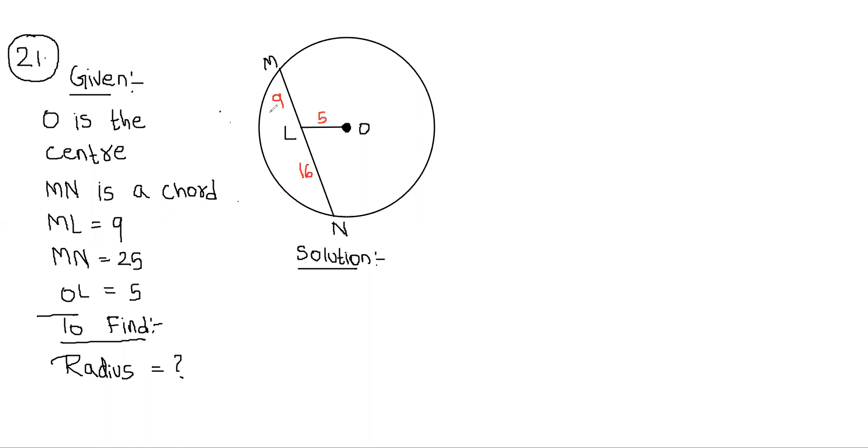So how to find the radius? We are going to extend here a few segments. Let us extend OL this side. Let us draw a straight line passing through this OL and name it as AB.